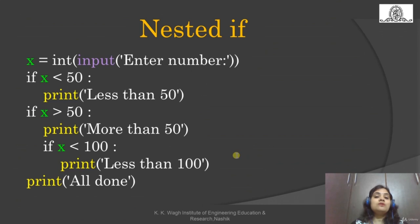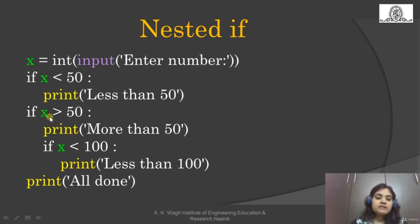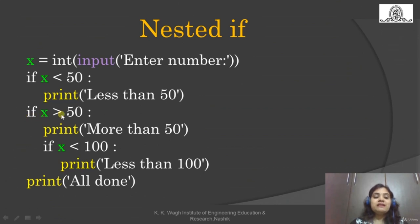Very important to note: this is the first if statement. Print is written under it. If x > 50 is true, only then the nested if x < 100 is executed. The nested if x < 100 is within the outer if x > 50 block. That means: only if x is greater than 50 will it evaluate whether x < 100.